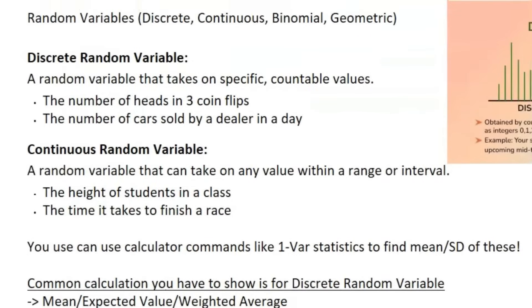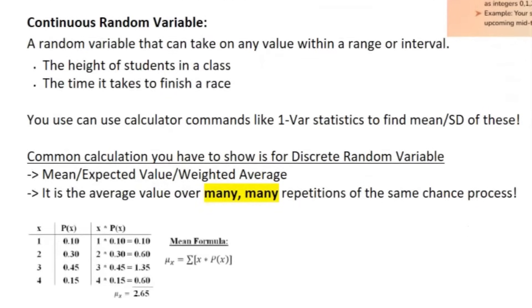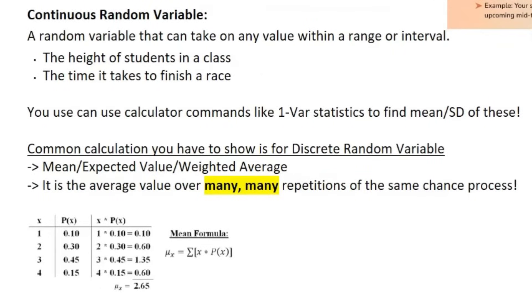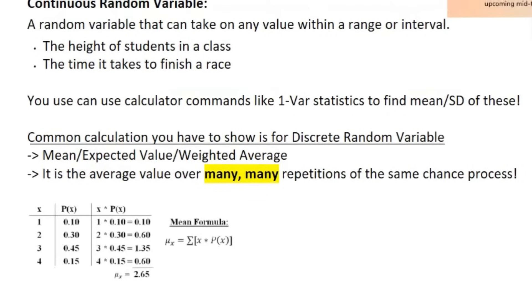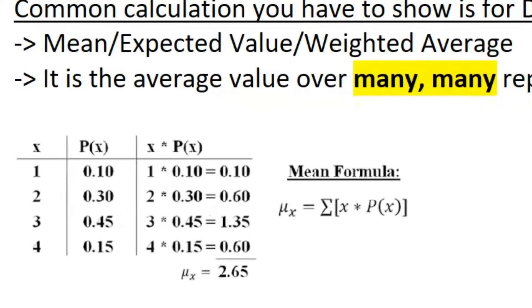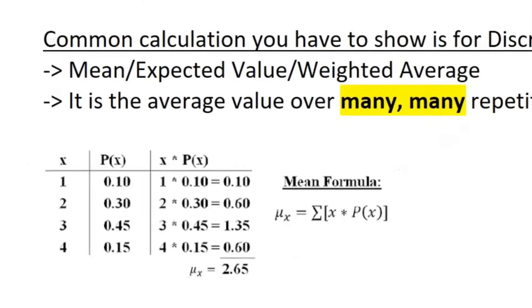So if you want to find the mean and standard deviation of discrete or continuous variables, you can also use one variable statistics on your calculator. And a common calculation you will probably have to show for discrete random variable is calculating the mean or expected value slash weighted average. It is the average value over many, many repetitions of the same chance process for this discrete random variable. Here's an example. You can see X basically just describes the value of that discrete random variable. And then P of X is just the probability of each of those variables. And so what you would do is just multiply across one times 0.1, two times 0.3, all the way to the end. And then whatever you get, you add everything. And that is your mean weighted average expected value.